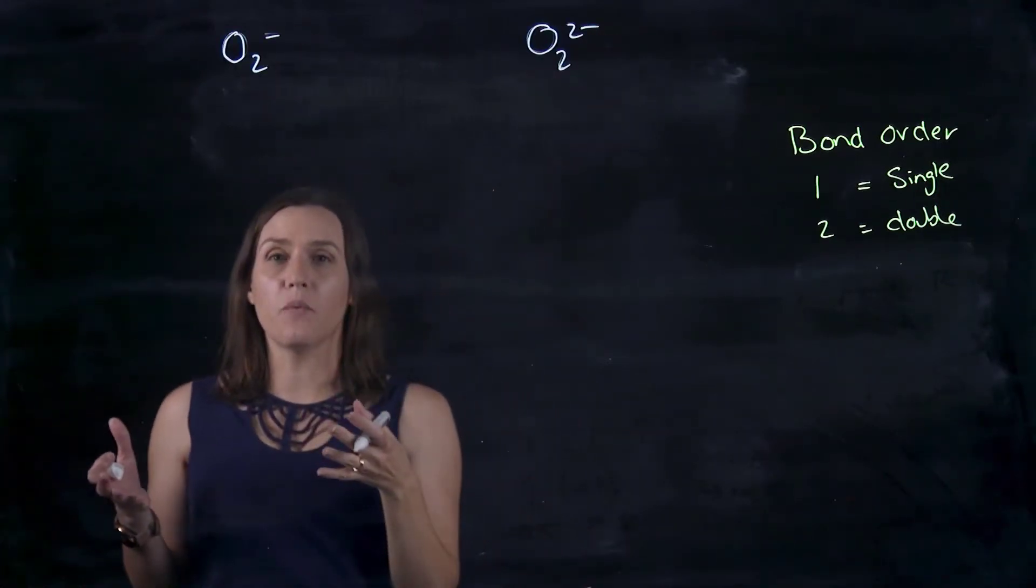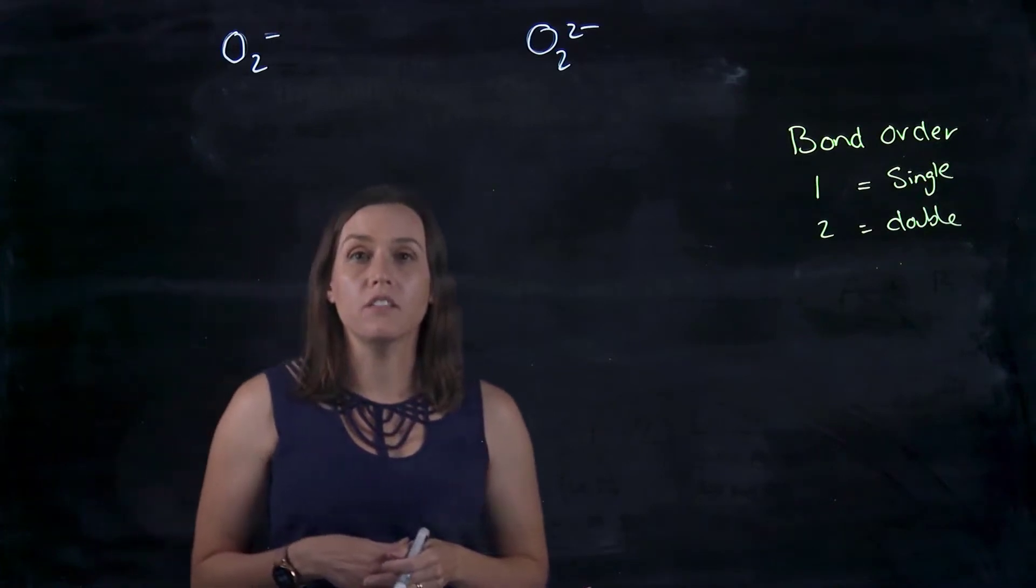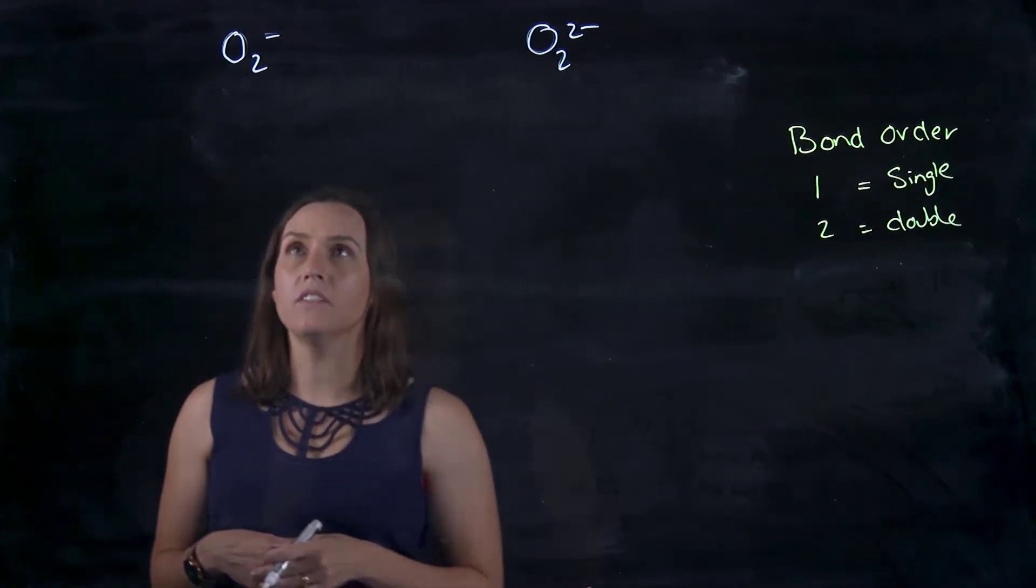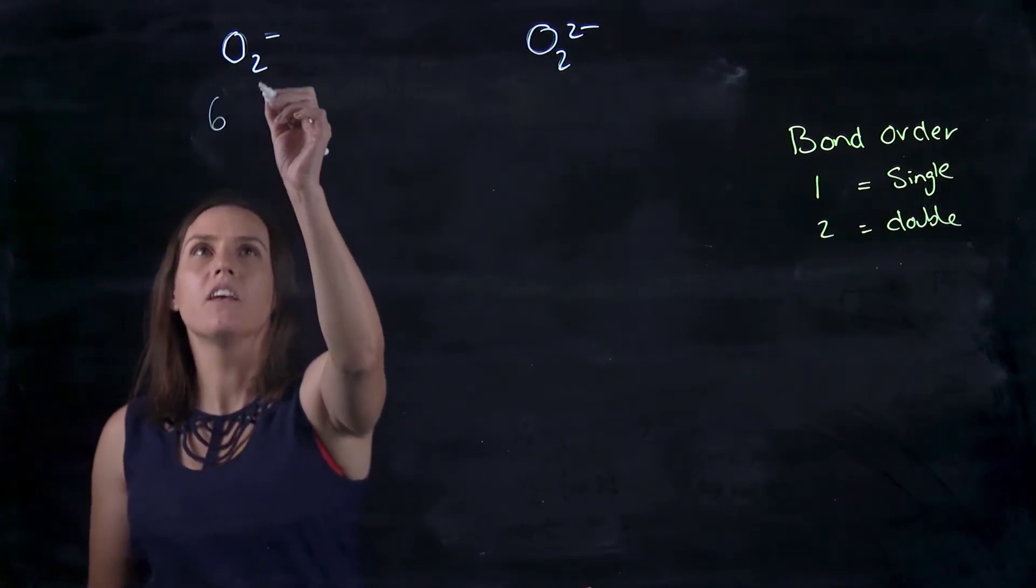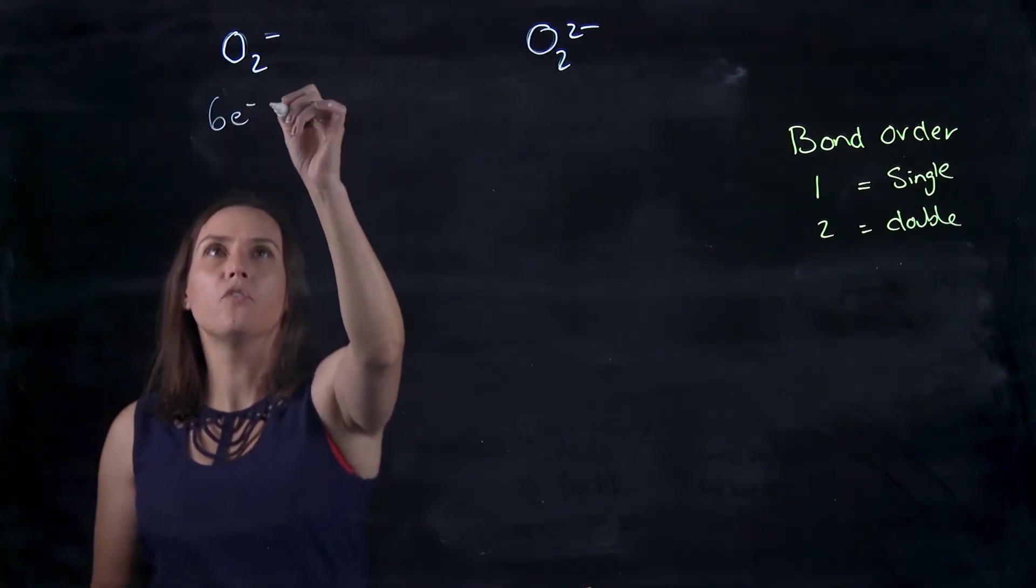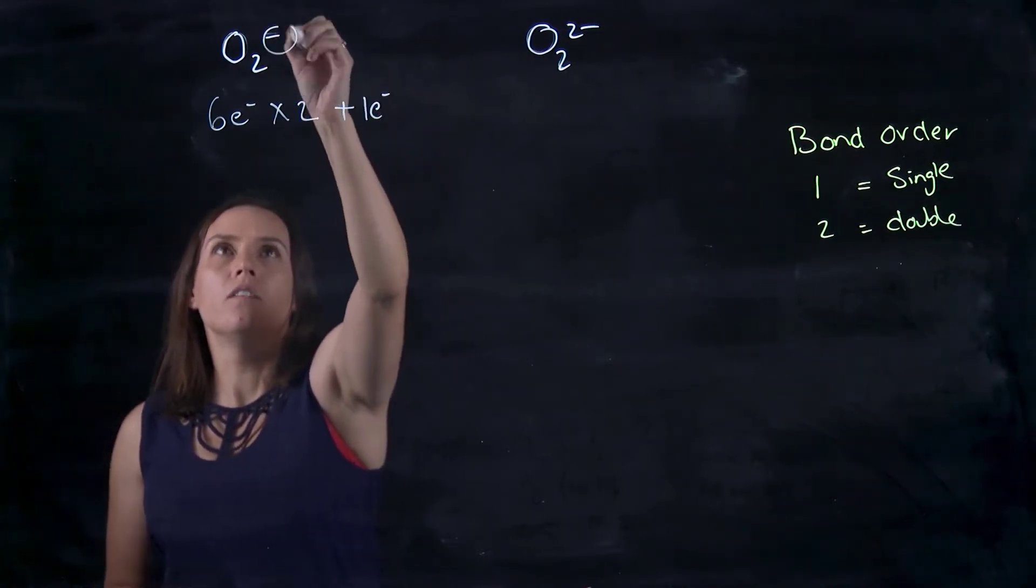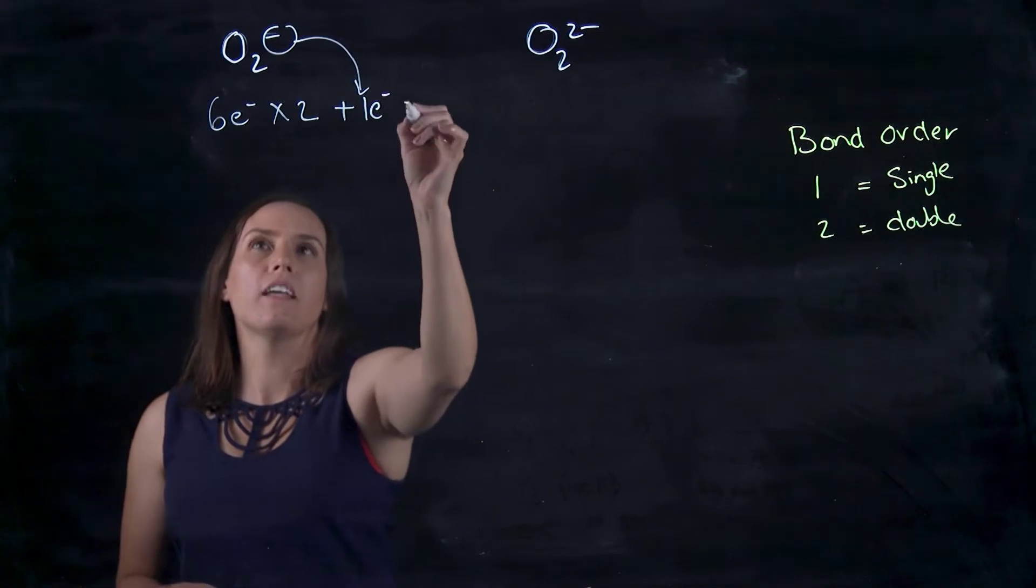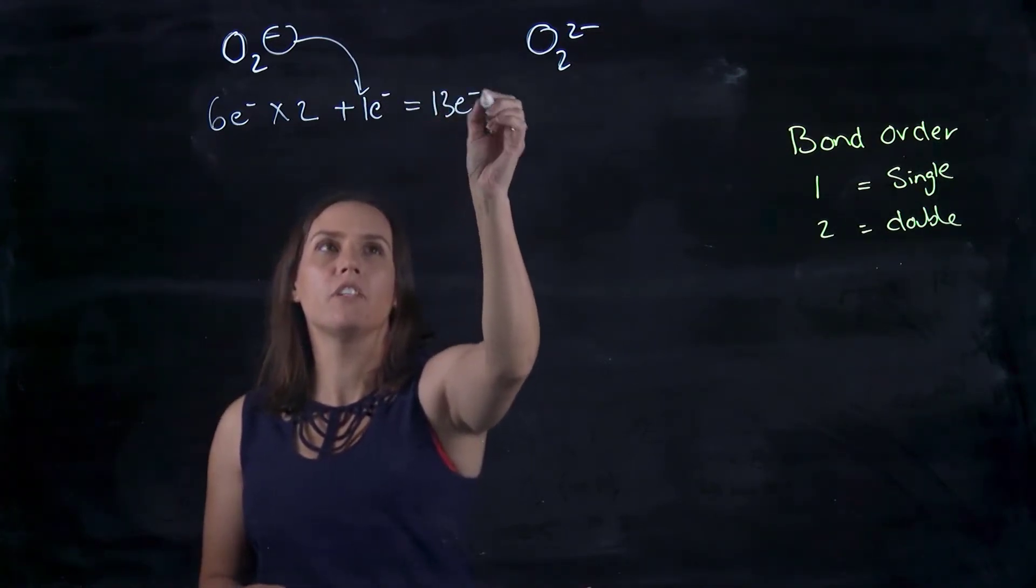Now, what is the number of electrons that I'll be filling these with? So each oxygen has seven. So each oxygen has six. So we've got six electrons and we've got two of them. And then we've got that negative there. So that gives us a total of six and six is 12 plus one, 13 electrons.